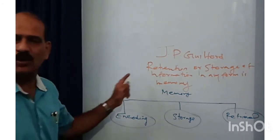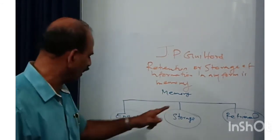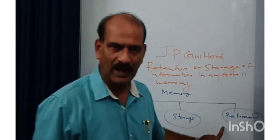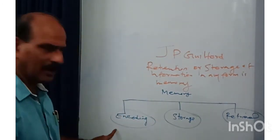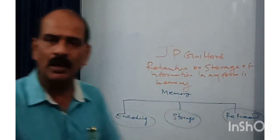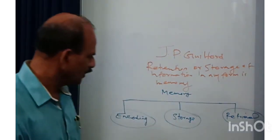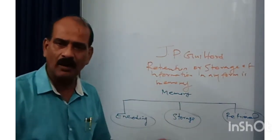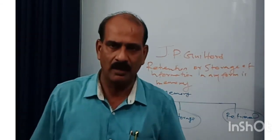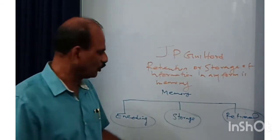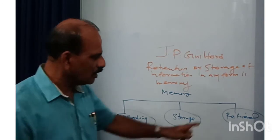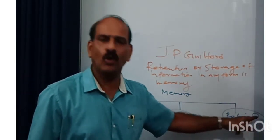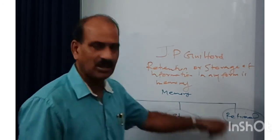Memory has three phases: encoding, storage, and retrieval. Encoding means placing information in our brain. Storage means stocking of information in our memory system. Retrieval means the ability to reproduce the stored item.